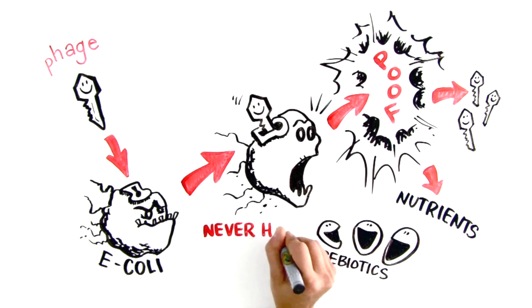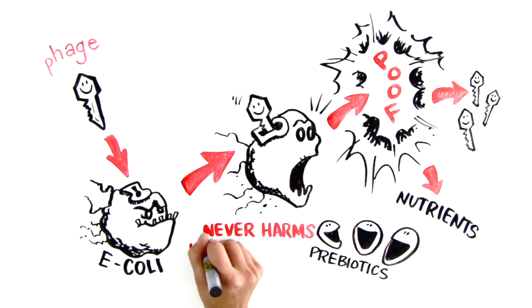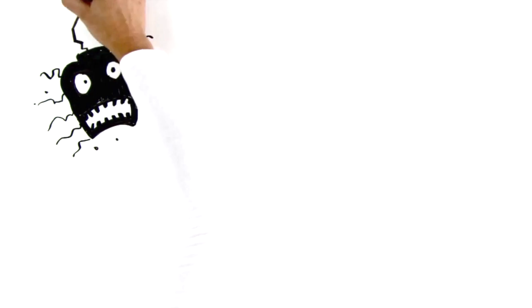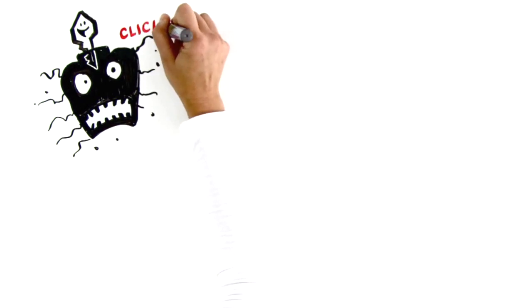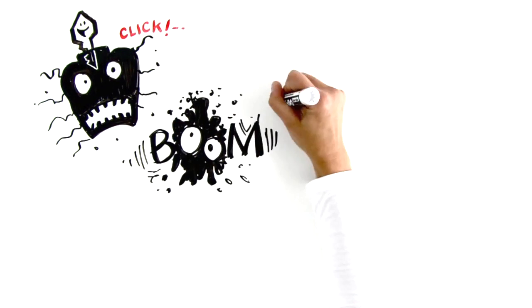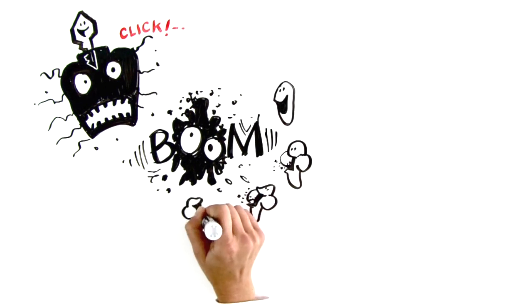Floraphage can only attach itself to harmful bacteria and can never enter or harm human cells. What this means for Katie is that it helps her body finally balance its bacteria levels through a two-step process of selectively attacking bad bacteria and then turning them into prebiotic nourishment for her good bacteria.